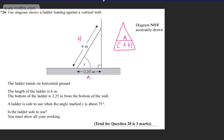That's the adjacent over the hypotenuse. So we can say cos Y equals 2.25 divided by 6. So Y will be equal to the inverse cosine, or cos to the minus 1, of 2.25 over 6.